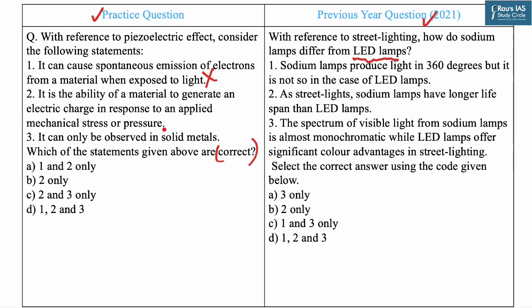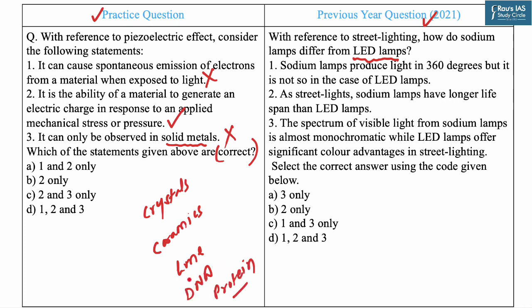Statement two says the piezoelectric effect is the ability of a material to generate an electric charge in response to an applied mechanical stress or pressure — this is correct. Statement three says it can only be observed in solid metals — this is incorrect, as the piezoelectric effect can be observed in crystals, ceramics, bone, DNA, proteins, and even some ionic liquids. The answer is B (statement 2 only). The PYQ answer is C (1 and 3 only).